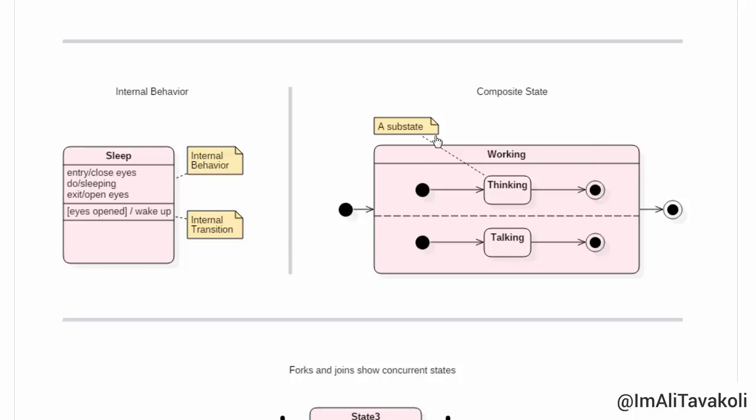Now, let's take a look at the composite state. So, in here, we have a working composite state, which in itself, we have two substates, thinking and talking. So, actually, in a composite state, we can have two or more state transition processes that each of them can have their own processes.